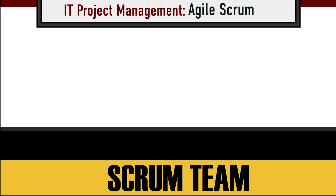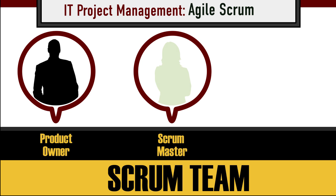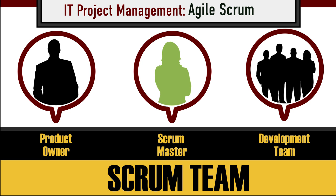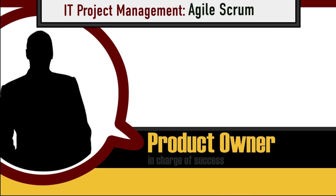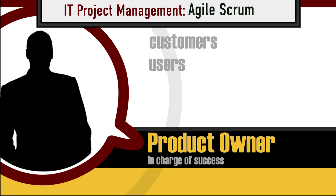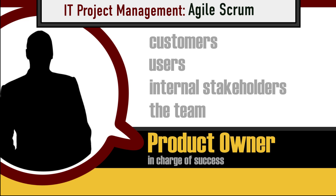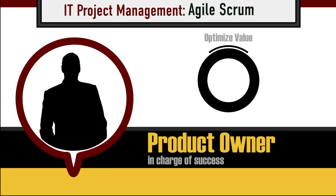A Scrum team is made of a Product Owner, a Scrum Master, and the Development Team. The Product Owner is in charge of the product's success. They talk to the customer, the users, any internal stakeholders, and the team to make sure the product is meeting the customer's needs. They also optimize the value of the team's work, identify backlogs, and prioritize the work.